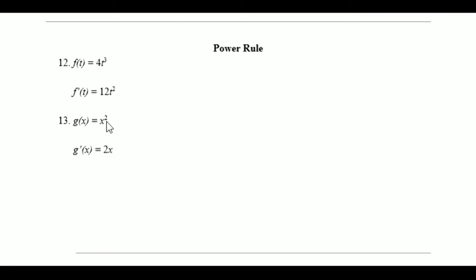Then you want to reduce the power by 1, which is 2 minus 1, giving you 1. The power of 1 is naturally left out when written. So the derivative of this is 2x to the first power.